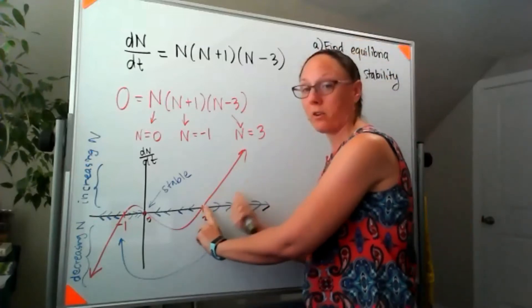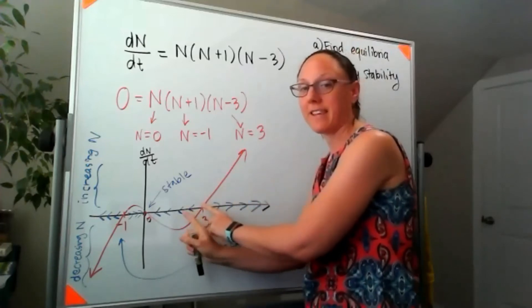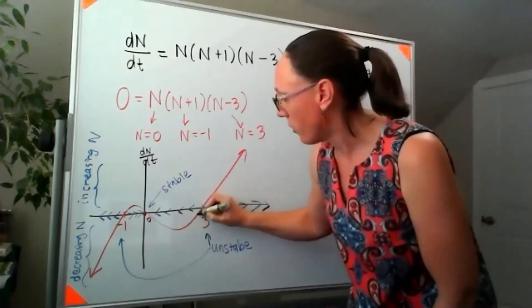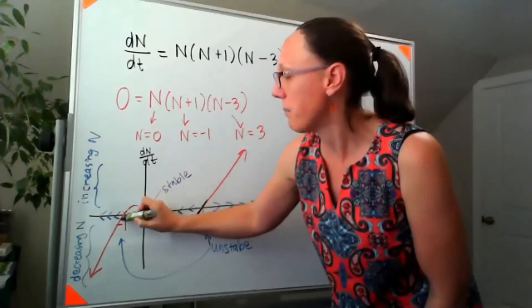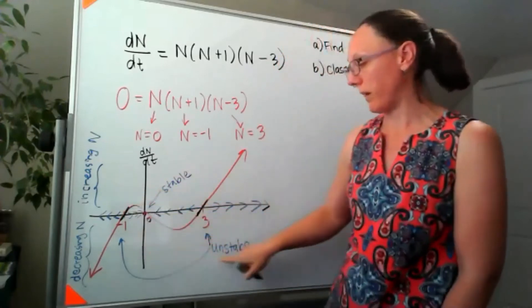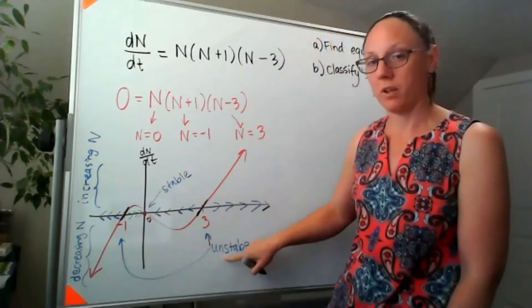they move to the left. So that positive slope moving through that point and that positive slope moving through that point lead to an unstable equilibrium.